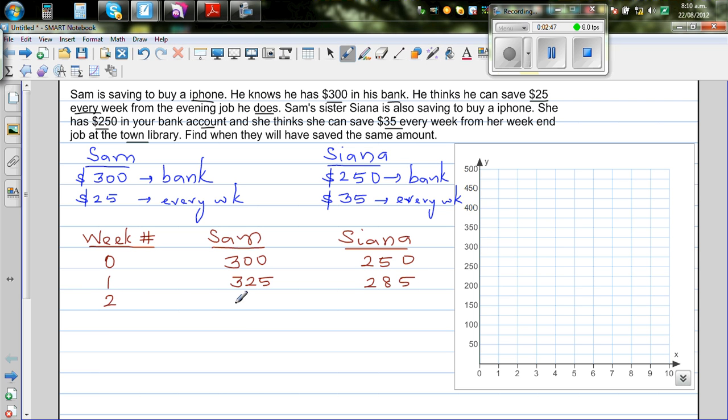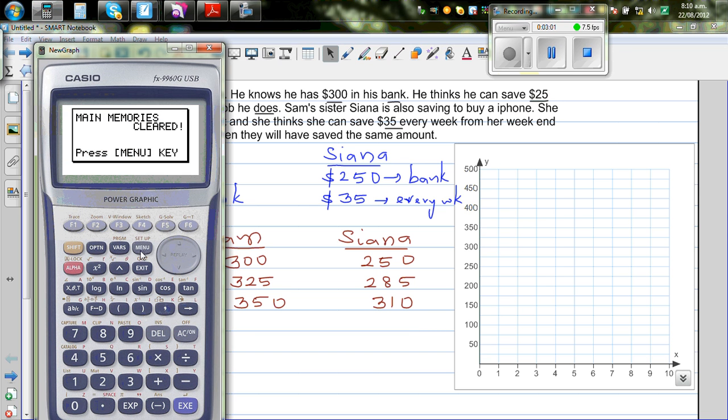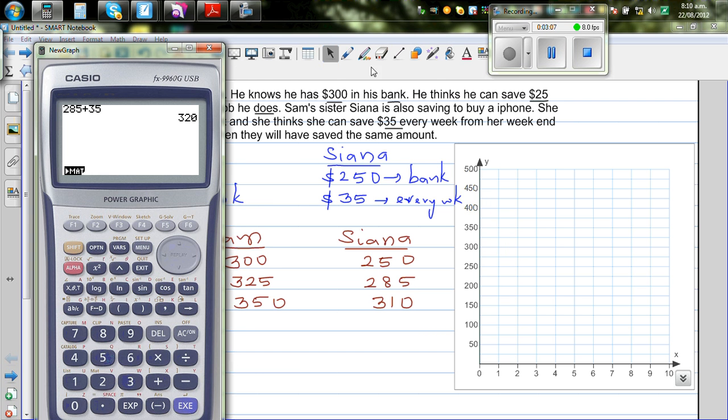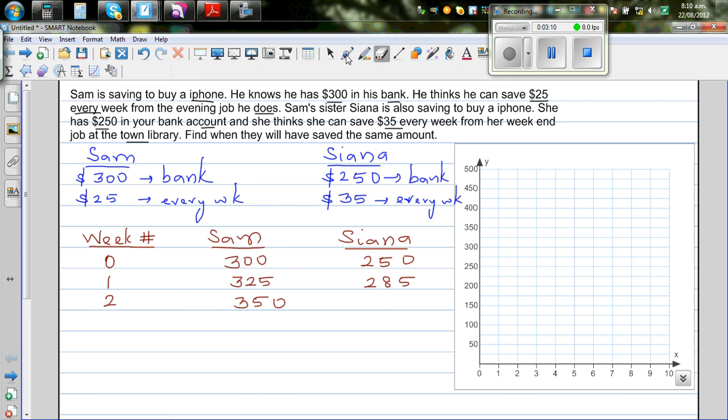In the second week, you add $25, so this is $350. And if you add $35, this is $310. Just to confirm, $285 plus $35 is $320.